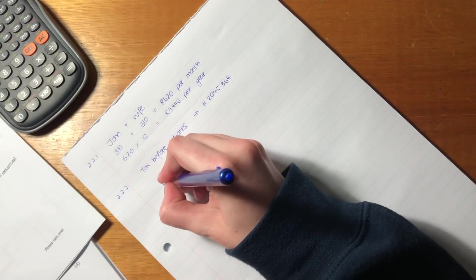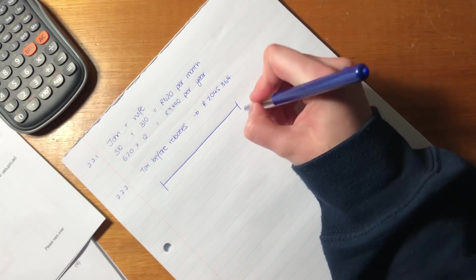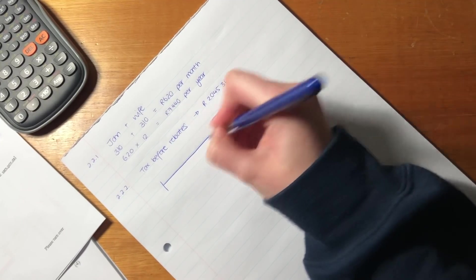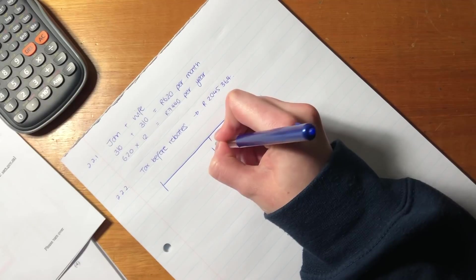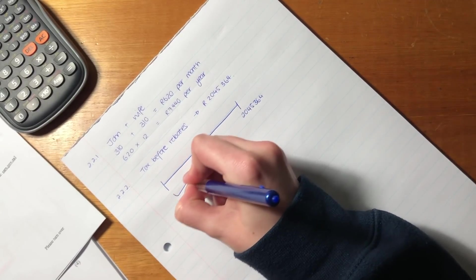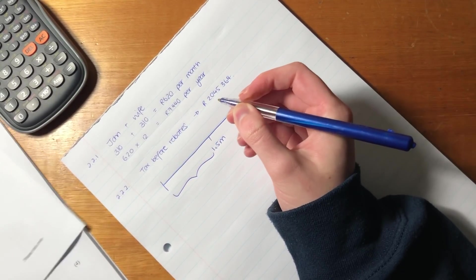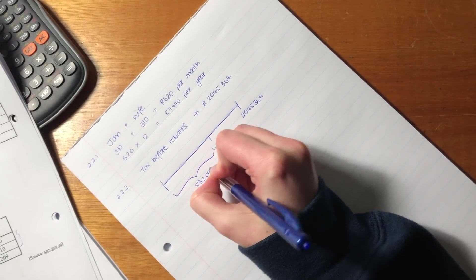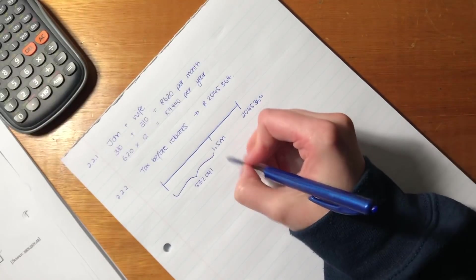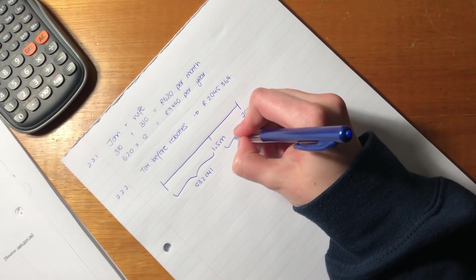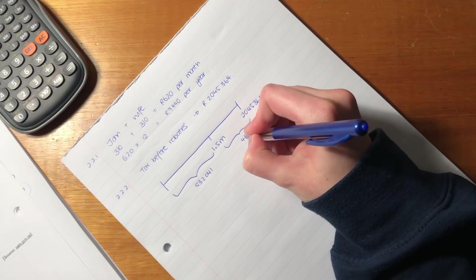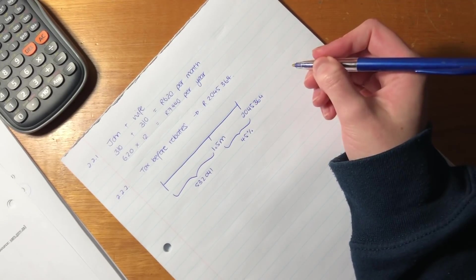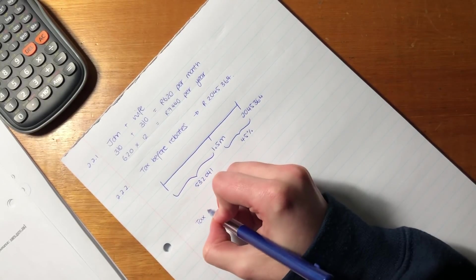Okay. So let's imagine that this little timeline represents his income. Okay. And somewhere over here is 1.5 million. Okay. For this proportion of his income, he's going to pay the 532,041. Okay. That's how much he's going to pay for anything below 1.5 million. For anything above 1.5 million, he's going to pay 45% of that to SARS. Okay. So let's just do that calculation.